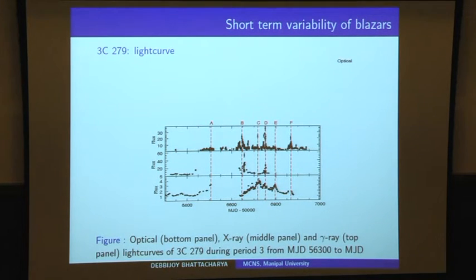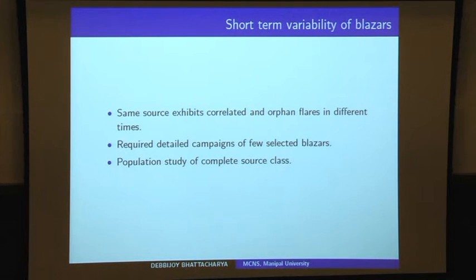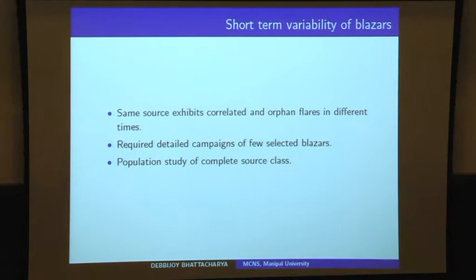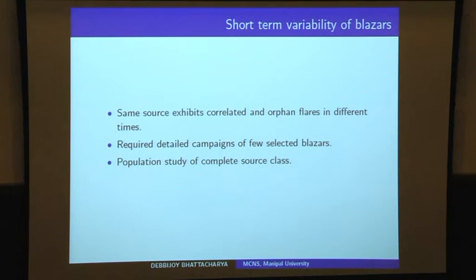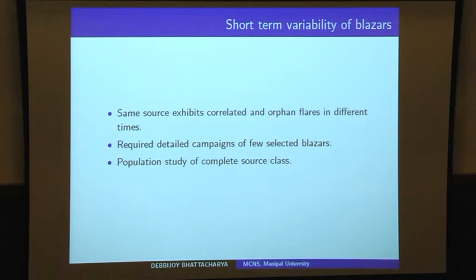What I can say here is that in order to understand these source classes, we need population studies of the complete source class, but because of the complexity of the system, we also need detailed multi-wavelength campaigns for a few selected blazars.